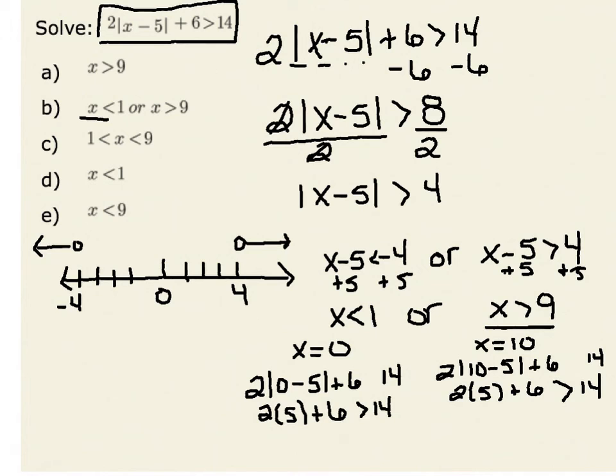Therefore, I know that I have a solution set of either x is less than 1 or x is greater than 9. If I wanted to write this in interval notation, I would write each one separately. For example, x is less than 1 can be written in interval notation as any number less than 1. Therefore, I would have negative infinity all the way up to but not including 1.